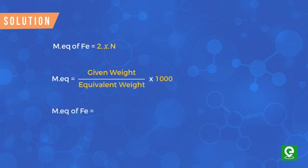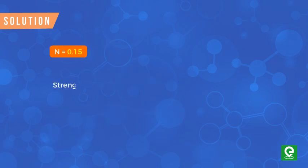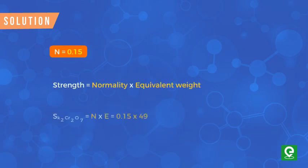So milliequivalents of the iron ore = (0.84 × X / 100) / (56/2) × 1000, which equals 2XN. Solving this, we get normality N = 0.15. The strength of potassium dichromate equals normality × equivalent weight = 0.15 × (249/6) = 7.35 g/L.